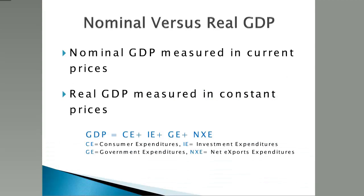How do you get the gross domestic product? By adding the four components: consumer expenditures, investment expenditures, government expenditures, and net exports.